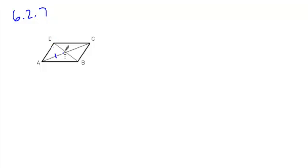If you're told that AE and EC are equal, and that BE is one half of BD, that means that these would then be equal as well. Is this enough to state that you have a parallelogram?